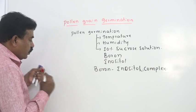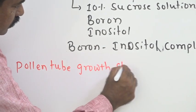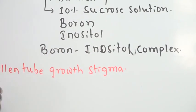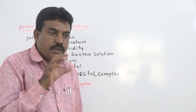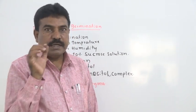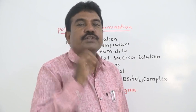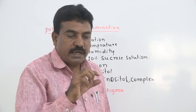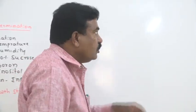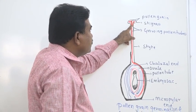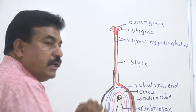The next topic is pollen tube growth on stigma. Once pollen germination takes place, the pollen tube emerges from the germinating pore — the small aperture in the exine where there is no deposition of sporopollenin. Through that germinating pore the pollen tube emerges. Once pollen tube growth takes place, the pollen tube releases some chemicals, causing the stylar tissue to dissolve and allowing slow growth of the pollen tube.